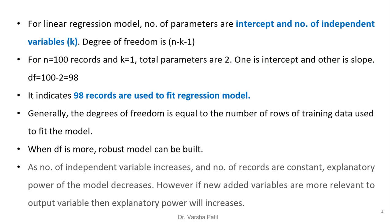For a linear regression model, the number of parameters are the intercept and the number of independent variables, therefore degree of freedom is n-k-1. For 100 records and k=1, total parameters are 2: one is intercept and the other is slope. Therefore degree of freedom is n-k-1, that is 100-1-1, which equals 98. It indicates that 98 records are used to feed the regression model. Generally, when df is more, a more robust model can be built.